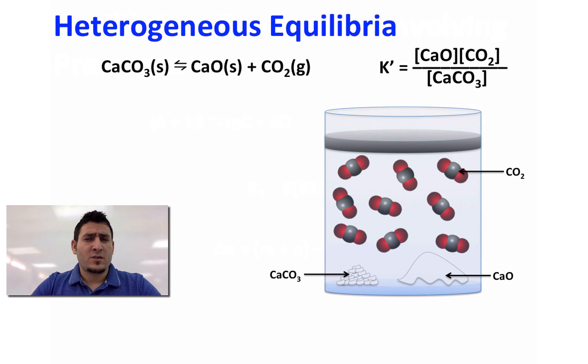Now let's discuss the heterogeneous equilibrium. So if we consider the decomposition reaction of CaCO3 into CaO and CO2, the equilibrium constant is equal to the concentration of CaO multiplied by the concentration of CO2 divided by CaCO3.